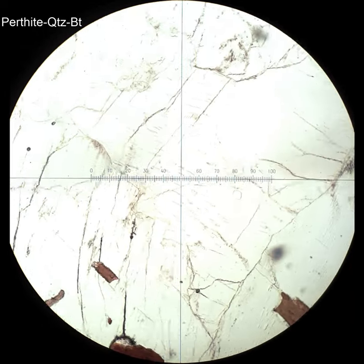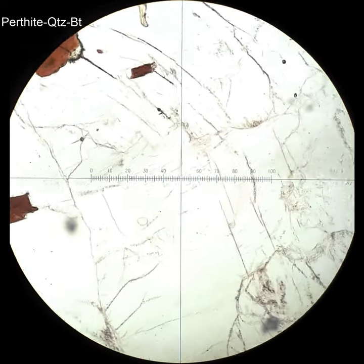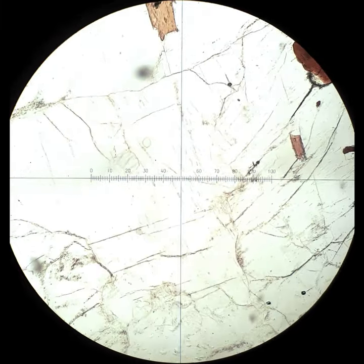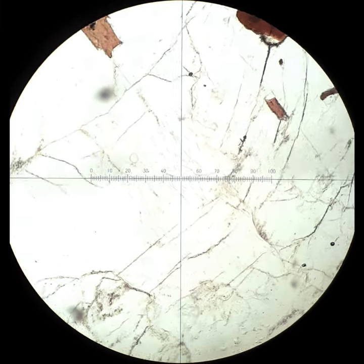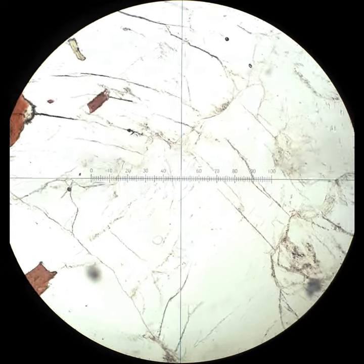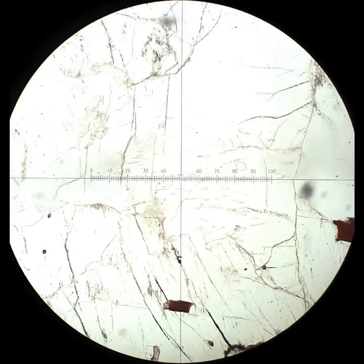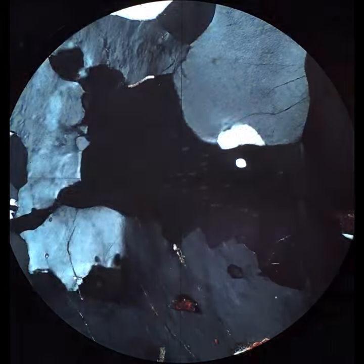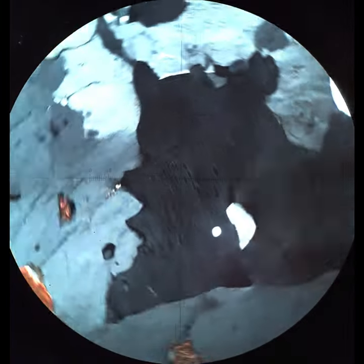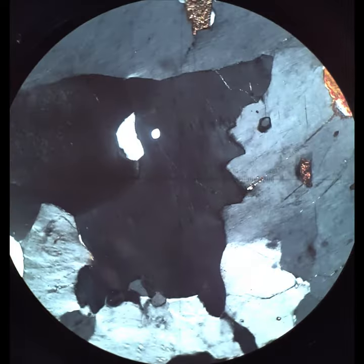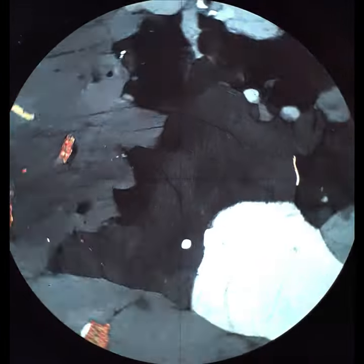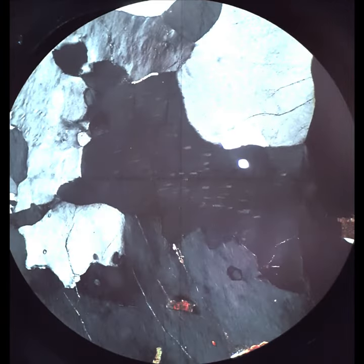Now high-temperature K-feldspar, when it cools off slowly, can exsolve little blebs or crystals of a sodic feldspar, albite, and you'll see that when I cross the polars that the crystal in the middle is not a homogeneous color. There are these other little gray and white blobs in there, and those are the more albitic feldspar that exsolved from the homogeneous feldspar. This is a texture, it's called perthite.